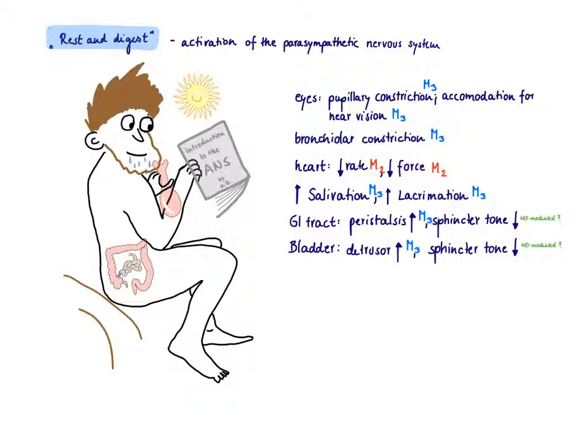The relaxation of the sphincters is probably mediated by nitric oxide, so it's an NO mediated effect, so nitrergic transmission which most likely mediates smooth muscle relaxation for the sphincters in the GI tract and the bladder.